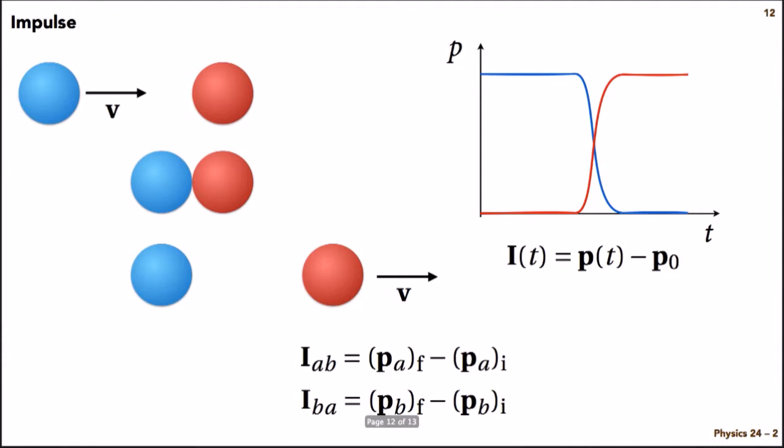So impulse I, which will be a function of time. If we look at the blue ball, its momentum is constant. Then it encounters the red ball, and its momentum drops precipitously. It comes to rest. Meanwhile, the red one undergoes sort of the mirror image.